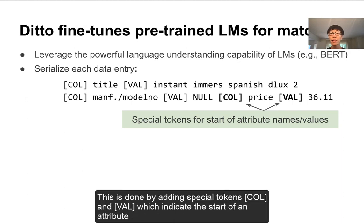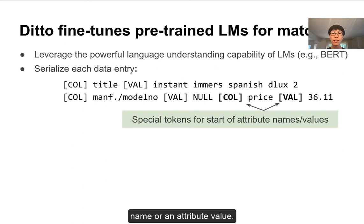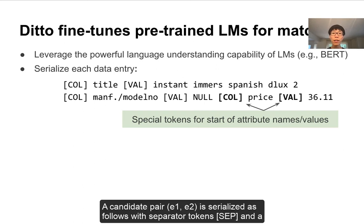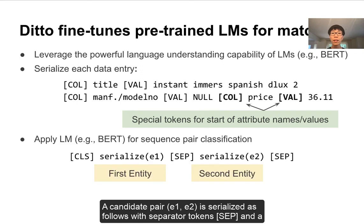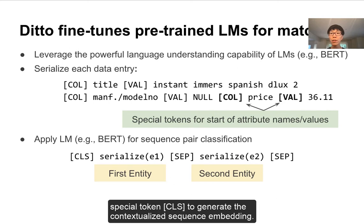This is done by adding special tokens — COL or VAL — which indicate the start of an attribute name or an attribute value. Then, for candidate pair E1 and E2, it is serialized accordingly by adding separator tokens and a special CLS token to generate the contextualized sequence embedding.